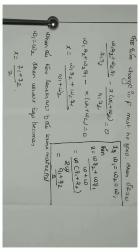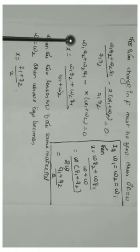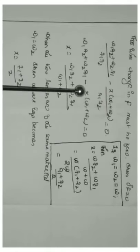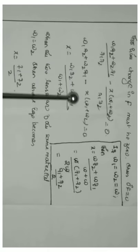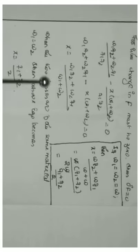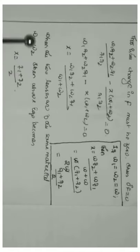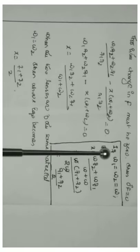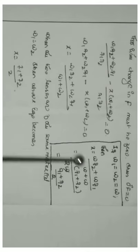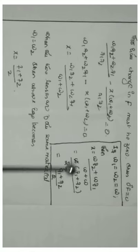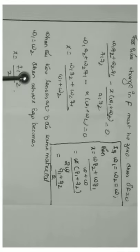Multiplying through by F1·F2 gives: ω1·F2 + ω2·F1 − X(ω1 + ω2) = 0, so X = (ω1·F2 + ω2·F1)/(ω1 + ω2). When the two thin lenses are of the same material, ω1 = ω2 = ω. Then X = ω(F2 + F1)/(2ω) = (F1 + F2)/2. So the separation X equals the mean of the two focal lengths.